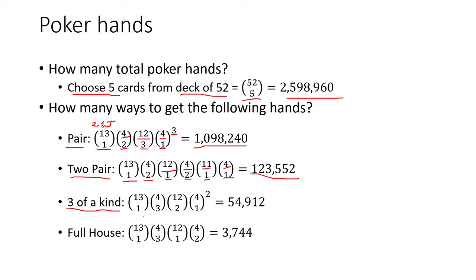So next is going to be a 3 of a kind. We first choose a rank for our 3 cards and then we choose a suit for each one of those. And then we can choose a rank for the remaining 2 cards. Notice that they have to be different. And then we choose a suit for each one of those. Because there's 2 cards we square this quantity here. And that gets us around 55,000.